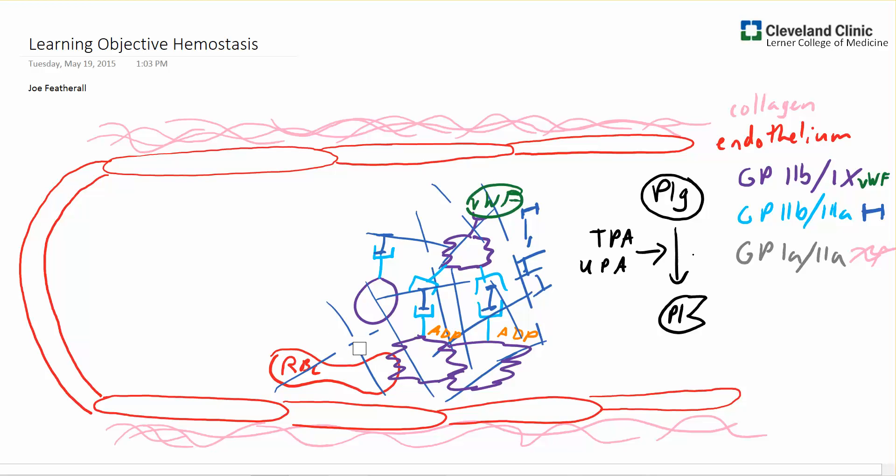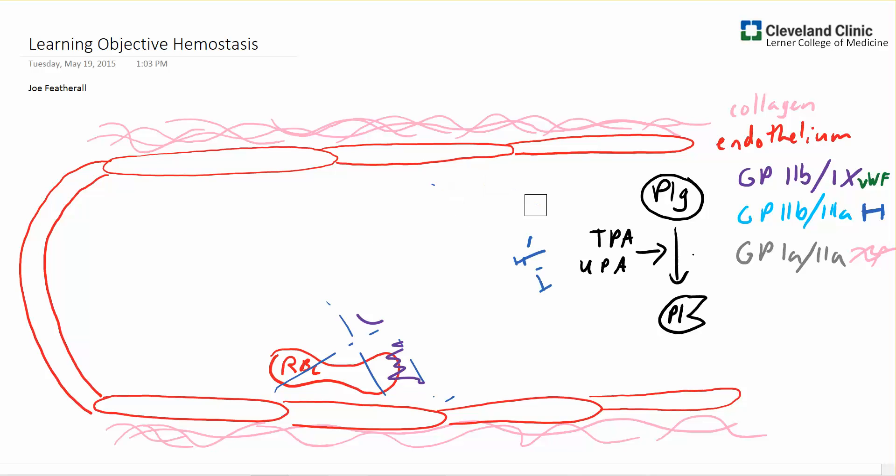Plasmin can then begin to chop up our fibrin molecules. And in doing this, it begins to release everything that's been aggregated. So we have the blood flow washing away our clot. It's taken back up into the bloodstream.